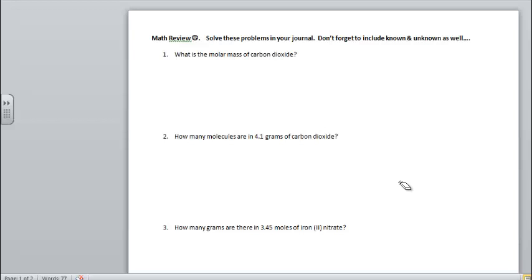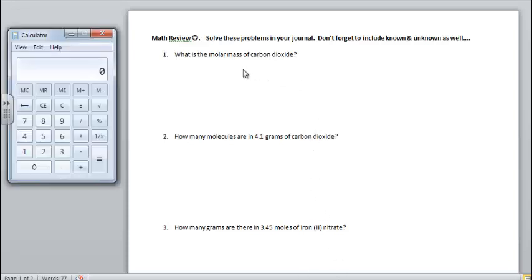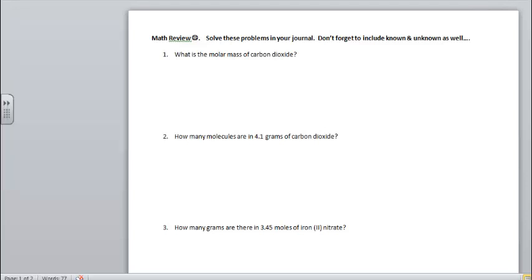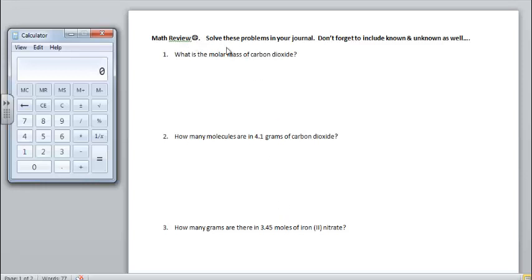Alright, so what we're going to do is go over the math review problems that you should have done for homework and finish for homework from after the test. What I need you to do is take out a calculator, also take out a periodic table, and possibly an ion sheet. We're going to be talking about a couple ions as well.